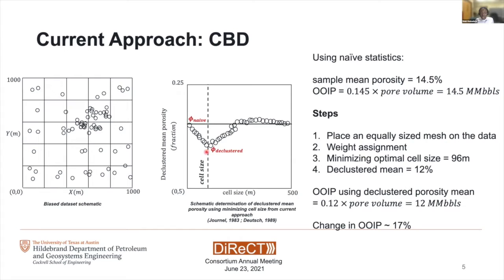We choose the minimum point and assign that as our optimal cell size and determine the declustered porosity at that point. That's how the current approach works. We discovered that the declustered mean porosity was 12% and therefore the change in original oil in place was by 17%. So if we're using the naive statistics as-is, we would make an erroneous reserve estimation. Although this already gives us the declustered porosity values, we hypothesize and have shown that this is actually overly conservative and often points in the right direction, but is not usually the actual value.